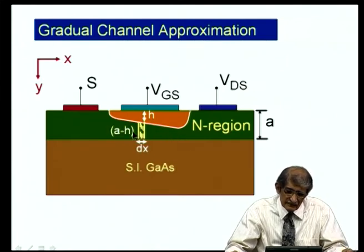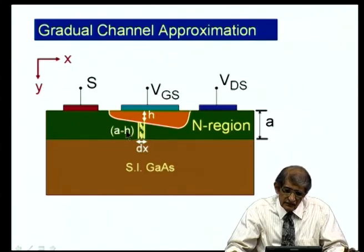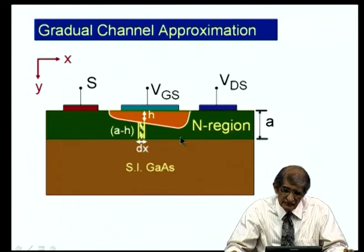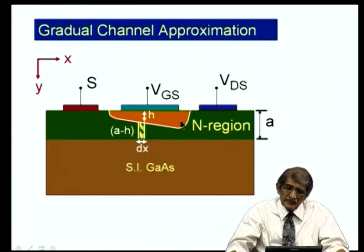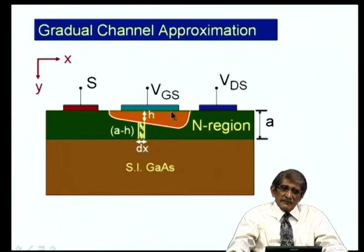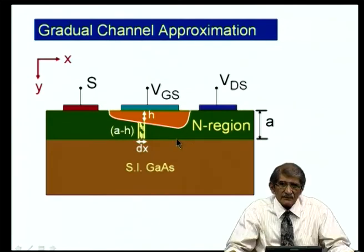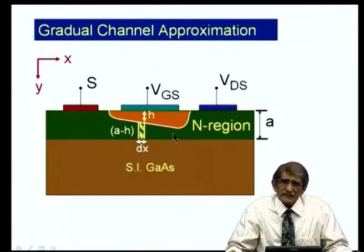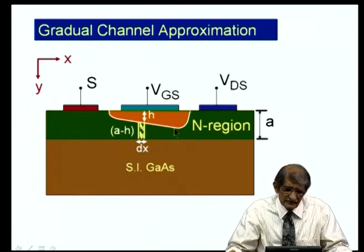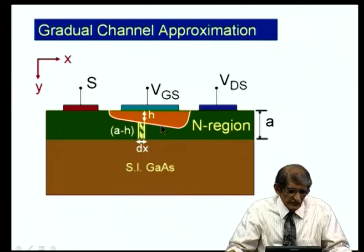The current saturates when a dynamic equilibrium is reached: the channel nearly closes at the drain, but if current tries to increase, the drop increases, the depletion layer widens, and the channel closes further, reducing current. The condition for saturation is: VBI − VGS + VDS = VP0. This is called Shockley's idealistic model and is valid for long-channel devices.